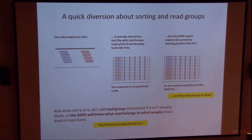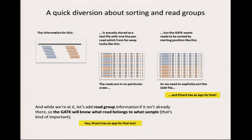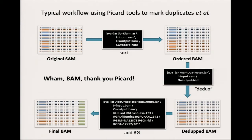We also want to assign read groups for each of the reads so that GATK will know what reads belong to what sample. As mentioned, the header of the BAM file has important tags saying which read group corresponds to which sample — this is where you actually tell the BAM file that information. Typically, once you have your original SAM, you sort it with Picard Sort Sam, specifying your input, output, and that you want it sorted by coordinates. Then you mark the duplicates and add or replace the read groups. Mark duplicates has to be after Sort Sam, but adding read groups can be done pretty much anywhere.